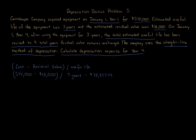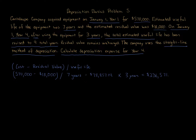That equals $78,857.14 per year. The equipment was placed in service on January 1st, Year 1. So Cantaloupe was taking $78,857.14 in Year 1, $78,857.14 in Year 2, and $78,857.14 in Year 3 — because the change happened on January 1st, Year 4, after three years. Multiplying $78,857.14 by three years gives $236,571.42 in total depreciation over the three-year period.